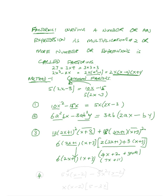Let's look at one more common factor example: 5x(x-2) - 3x²(x-2). Here (x-2) is a common factor, and x is also common to both terms. Taking out x(x-2), we are left with 5 - 3x. So the factored form is x(x-2)(5 - 3x).